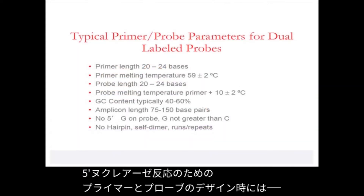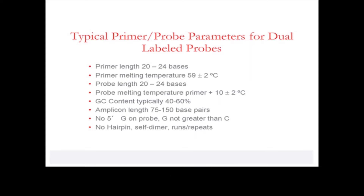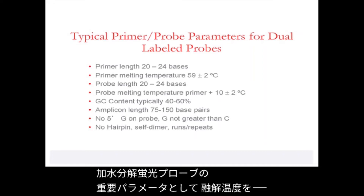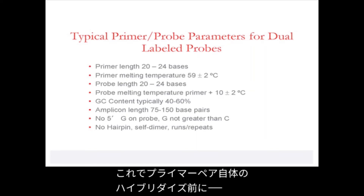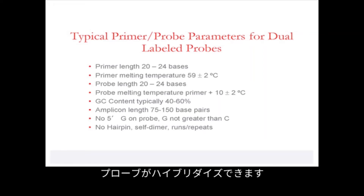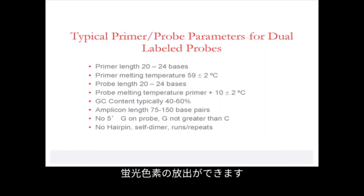A number of desirable physical parameters should be met as closely as possible when designing primers and probes for a five prime nuclease reaction. Perhaps the key parameter for a hydrolysis probe is to ensure that the probe melting temperature is around seven to ten degrees centigrade higher than the melting temperature of the primer pair. This allows ample opportunity for the probe to hybridize to its complementary target before the primer pair itself hybridizes, thus ensuring that the probe is in place for subsequent hydrolysis and release of the fluorescent signal.